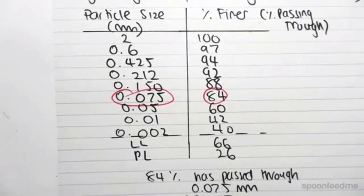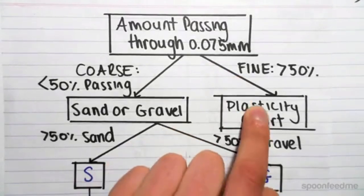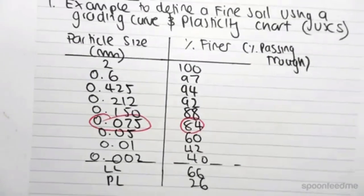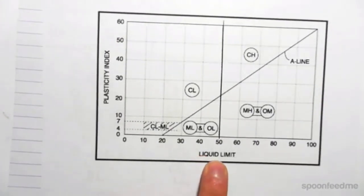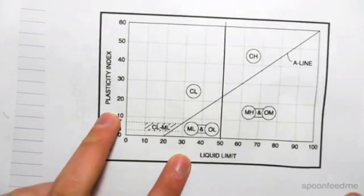So let's go on now. So now, from our flowchart, we've seen that it's a fine material, which means that we need to use this plasticity chart. So what is the plasticity chart? The plasticity chart graphs the liquid limit against the plasticity index. So we need to know these two parameters.